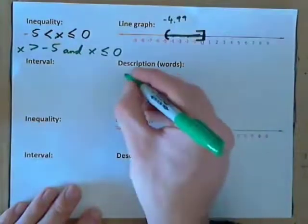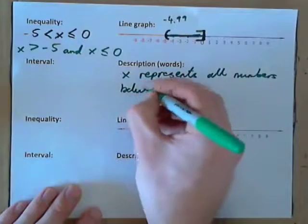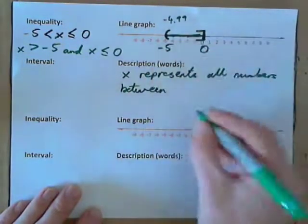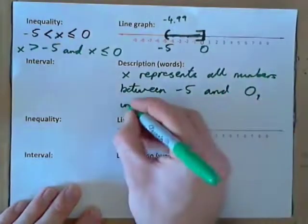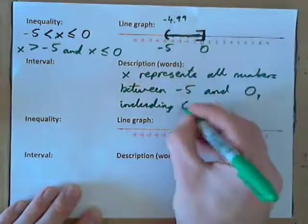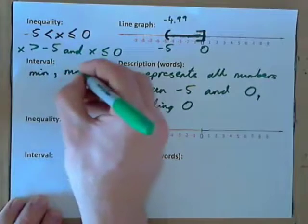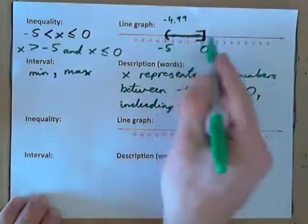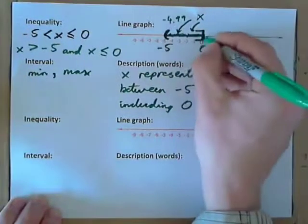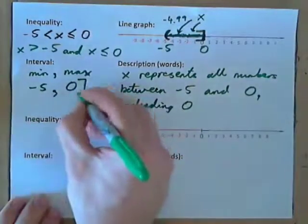As a description, we could say: x represents all numbers between negative 5 and 0, including 0. Does it include negative 5? No. Does it include 0? Yes — including 0. And then write down the interval: min, comma, max. The minimum number is negative 5, the maximum number is 0. x represents all these numbers — not including negative 5, but including 0. Negative 5 is not included, 0 is included.